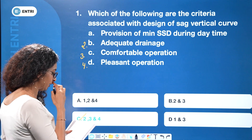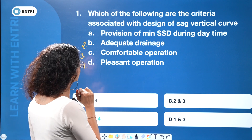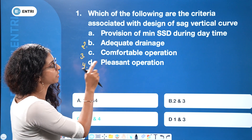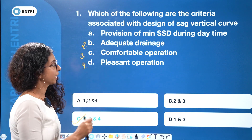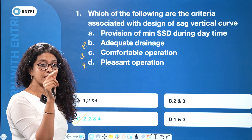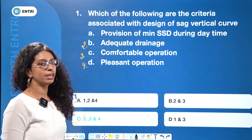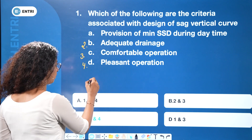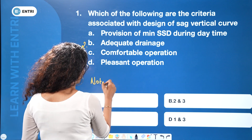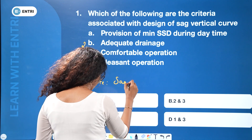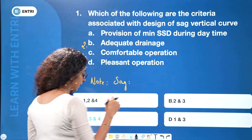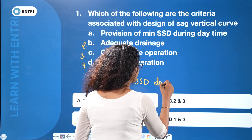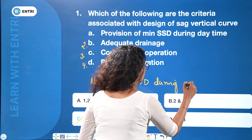SAG curve is considered in this case. Provision of minimum stopping sight distance during daytime — but for the SAG curve, stopping sight distance (SSD) is calculated during night time. We calculate SSD during night and consider it.